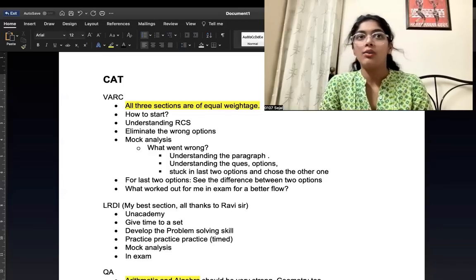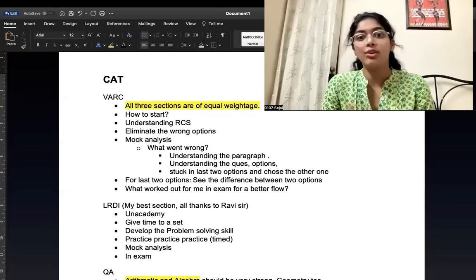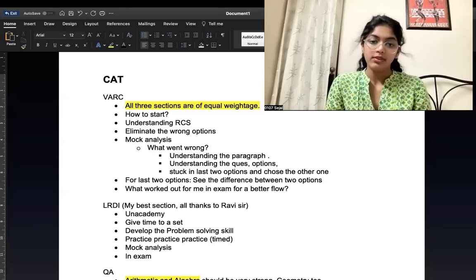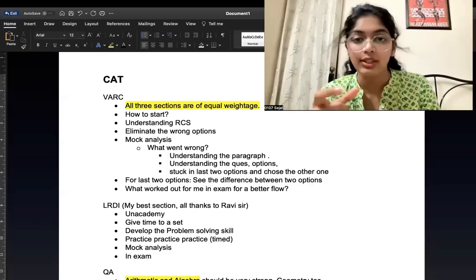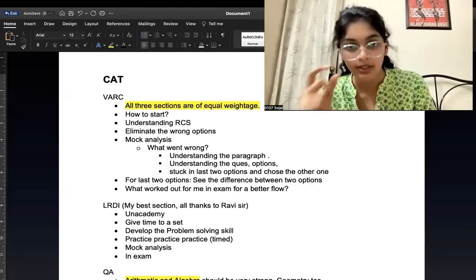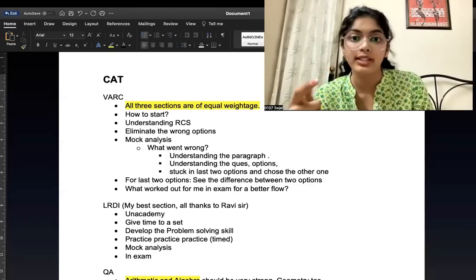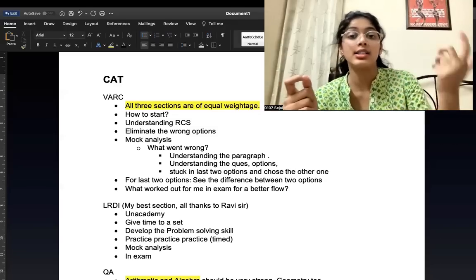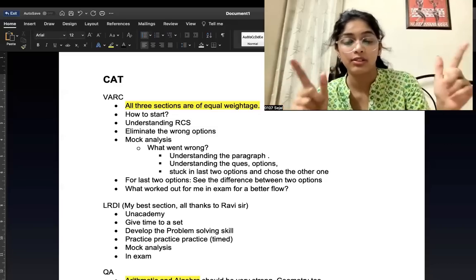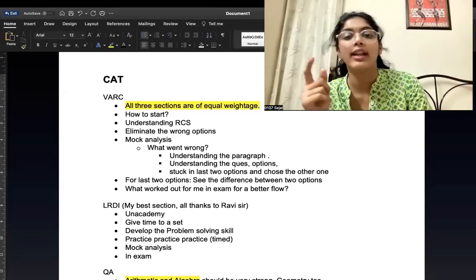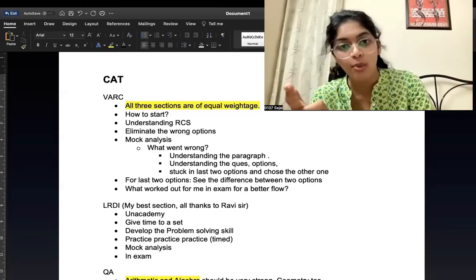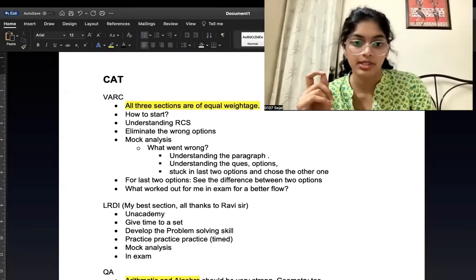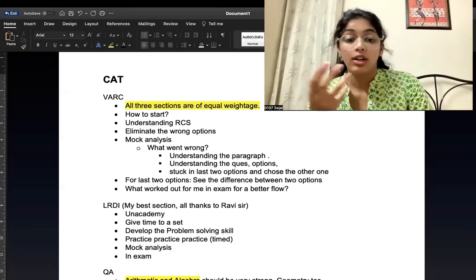So what I did, what I tried to do to avoid this problem was, I used to see the differences between those two options. For example, I am stuck between C and D. What is the difference and which relates better to the RC? So in that way, if you see the difference between two options in the last two close options, then that would help avoiding the mistake.